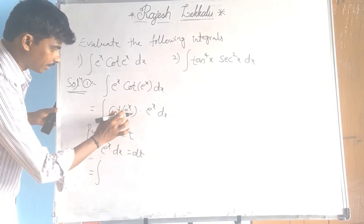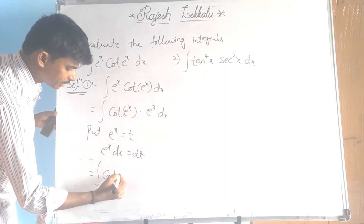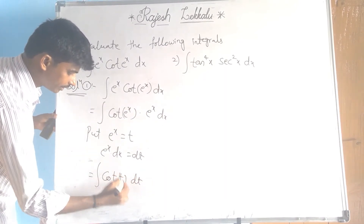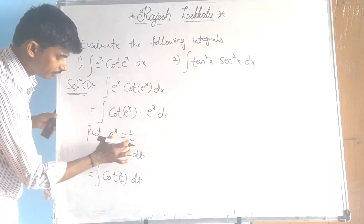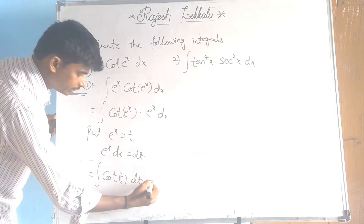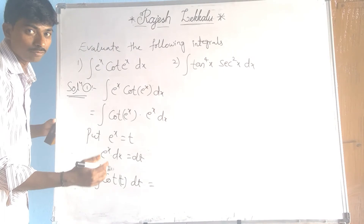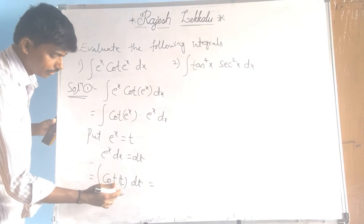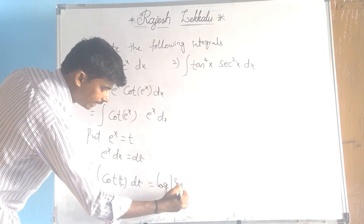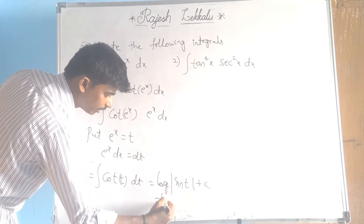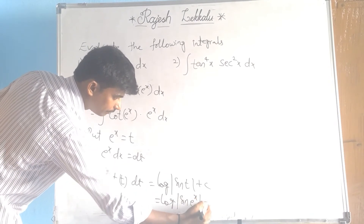That equals integral of cot(t) dt, where eˣ dx is replaced by dt. Using the derivative formula: integral of cot(x) dx equals log|sin(x)|. So here with respect to t, that gives log|sin(t)| + C, which equals log|sin(eˣ)| + C.